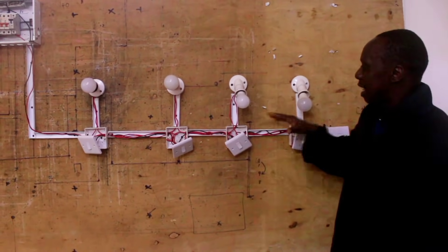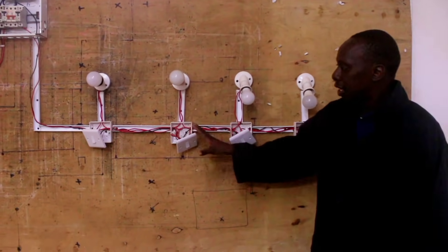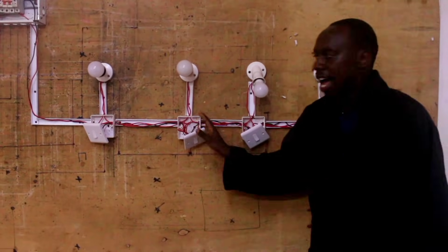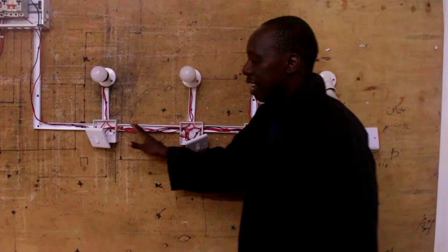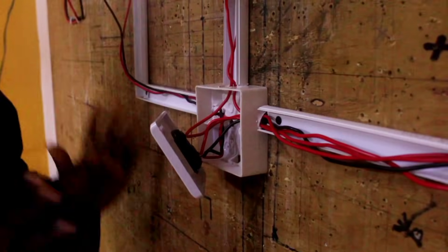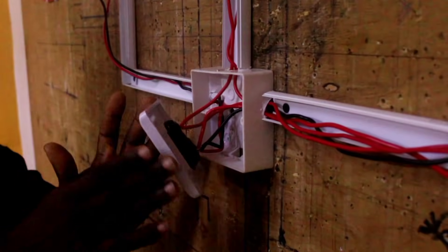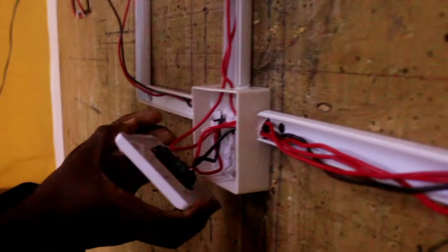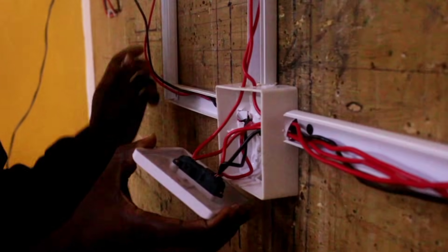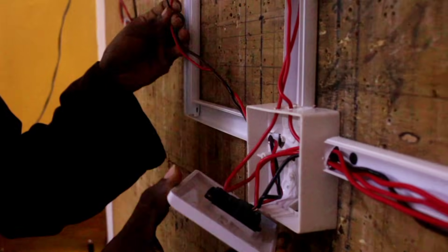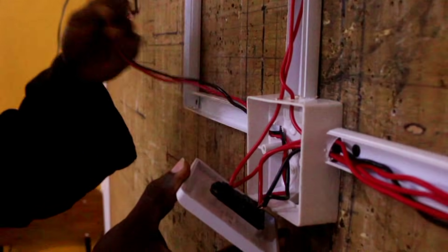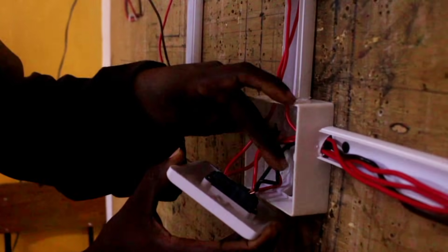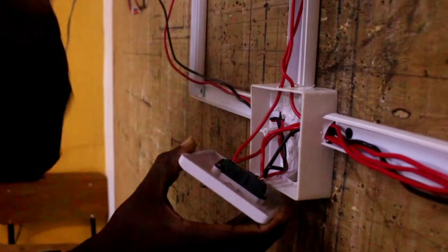This is the tunnel switching. You can get closer and see the wiring. Both switches are one gang two way. This is the first switch — you can see the connection. This is my live from supply and this is my neutral from supply.